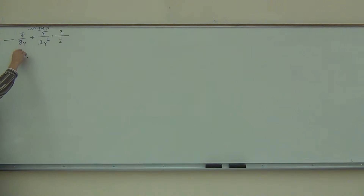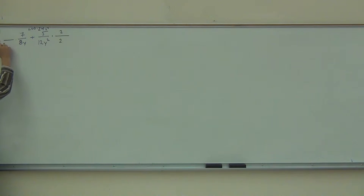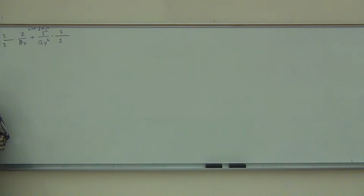On the left-hand side, I have an 8y. I need to get to 24y squared. The number I need to multiply by to get from 8 to 24 is 3. And for the variable, to get from 8y to 24y squared, I multiply by y.